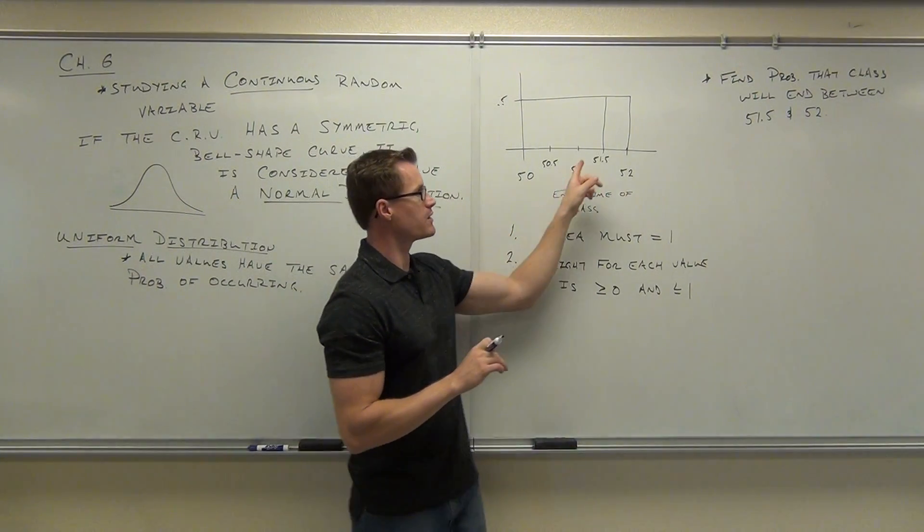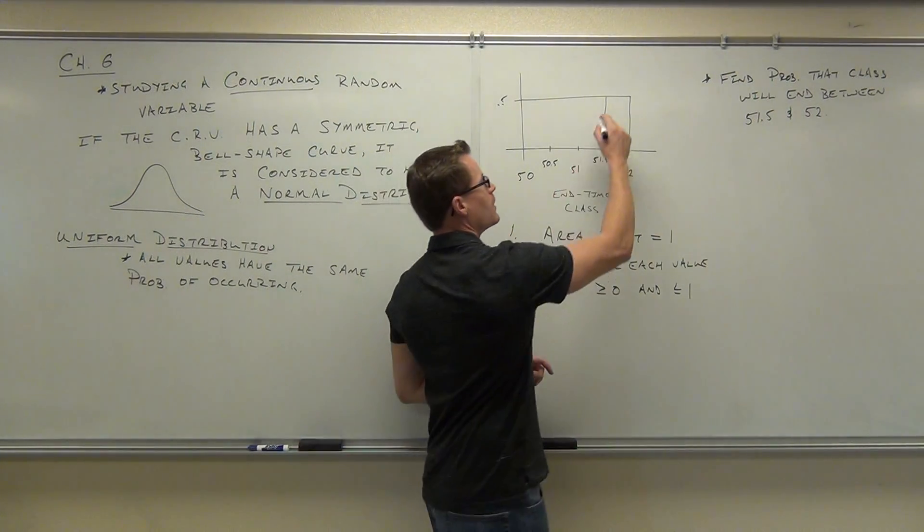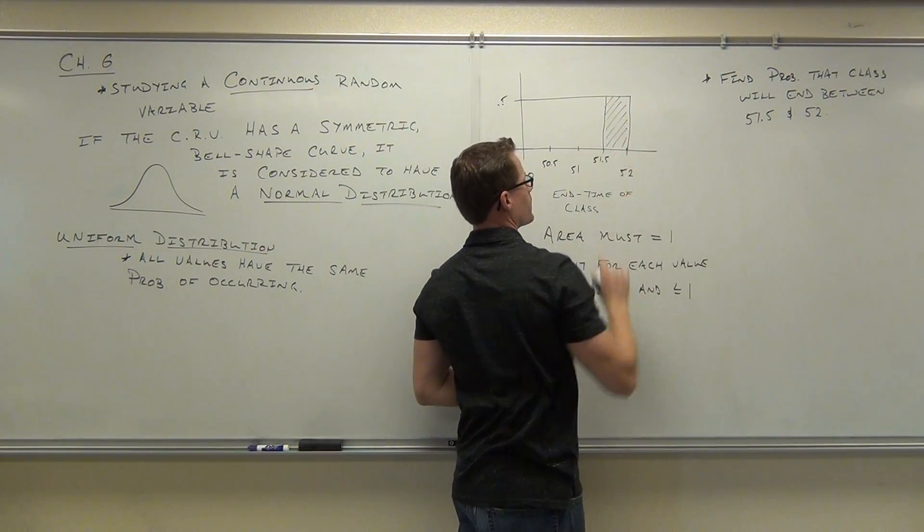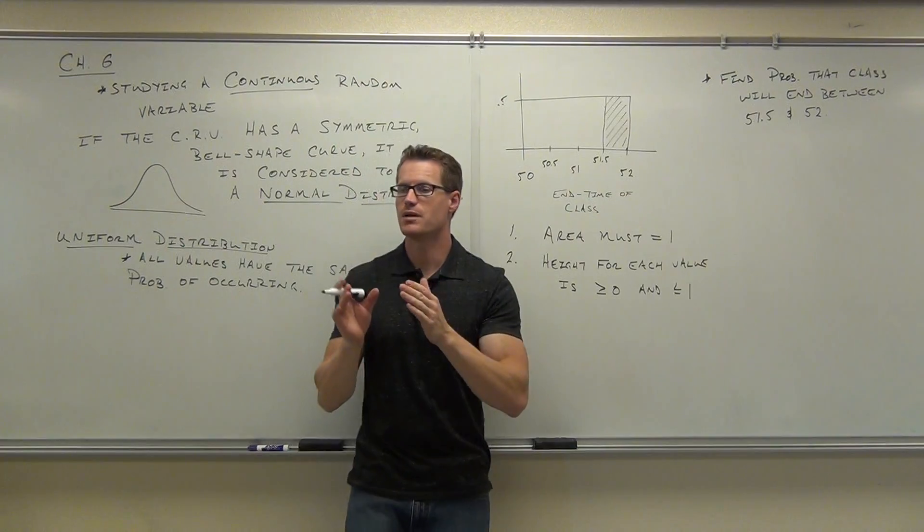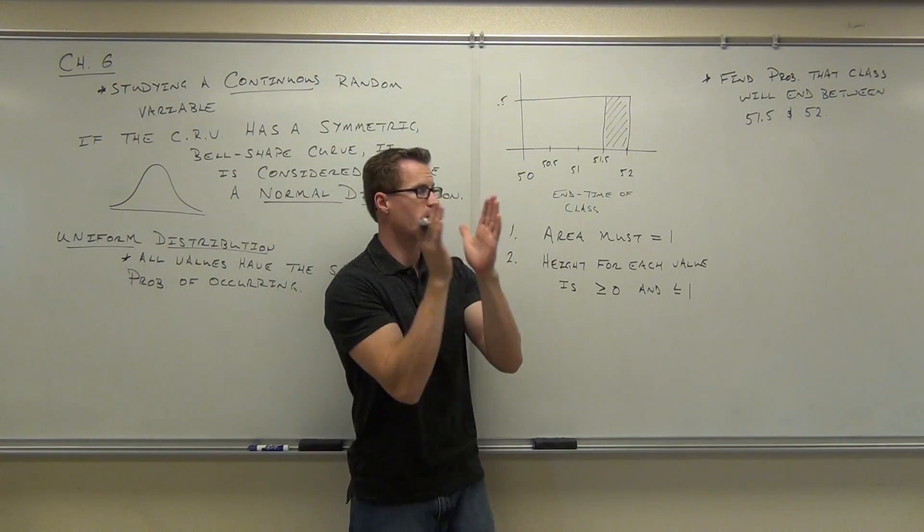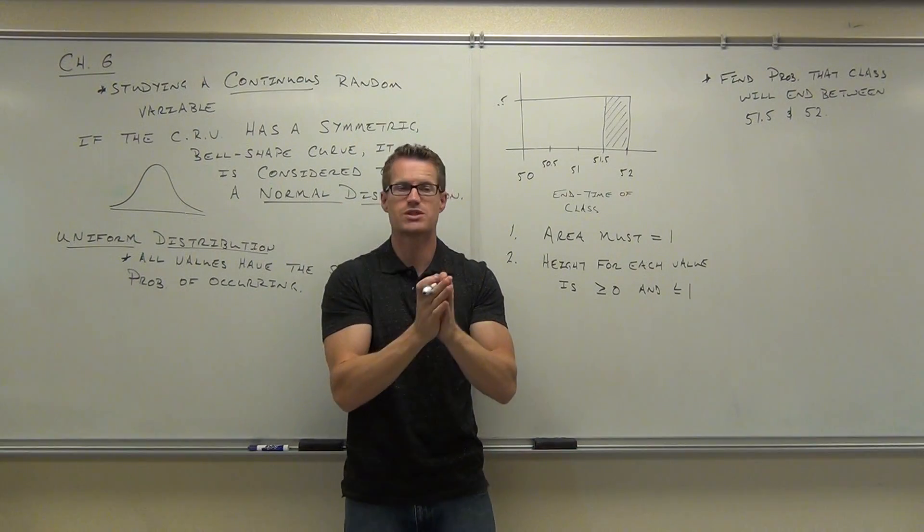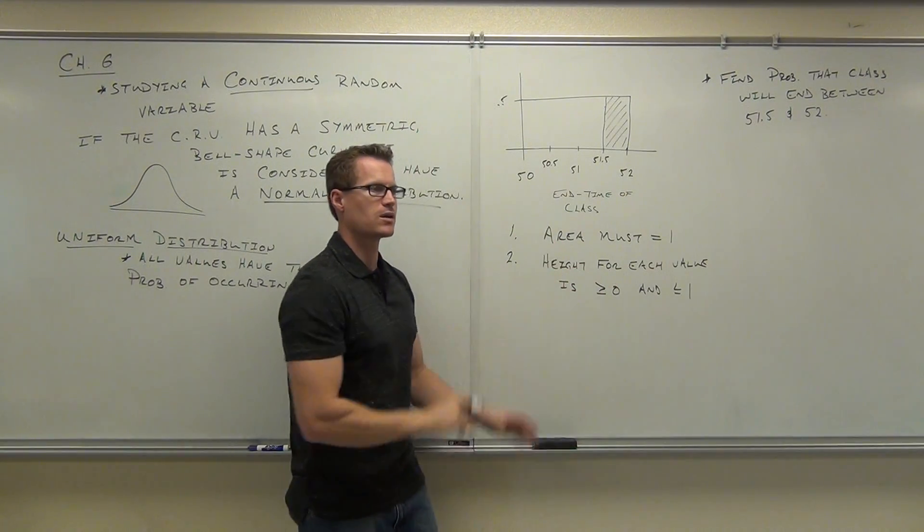Good deal. So what I'm asking you is not for 51.5, but this range. I'm asking you for what's the probability we're going to end between a couple times, between 51.5 and 52? That's something we can talk about. That's a range of numbers. That's an area. Let's see if we can calculate this area.